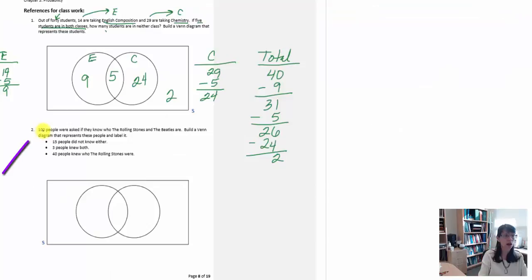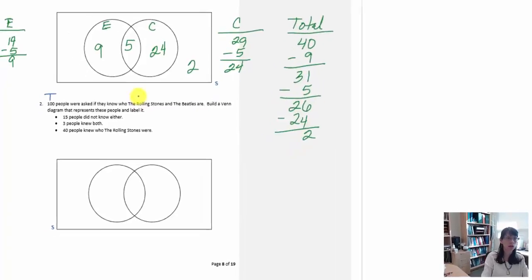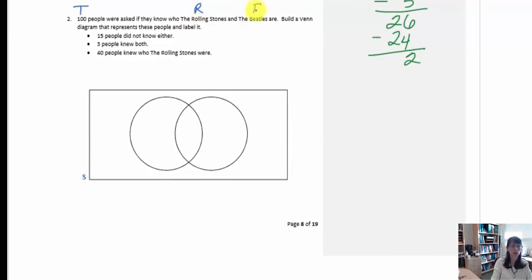In the second example, 100 people were asked if they know who the Rolling Stones and the Beatles are, so our total is going to be 100 people. We have the Rolling Stones and the Beatles as the events. I'll use R for Rolling Stones and B for Beatles. We set up a rectangle for the universe with an S for sample space, and two circles — one event R for Rolling Stones and the other event B for Beatles.